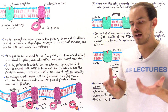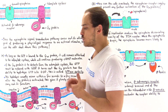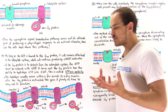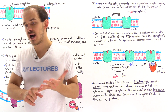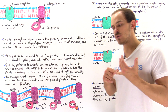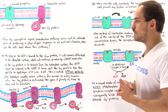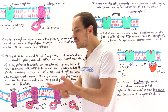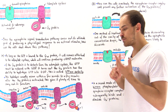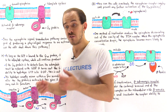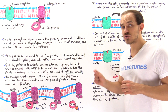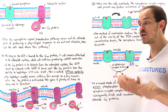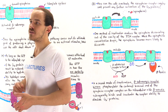In the previous lecture we discussed the epinephrine signal transduction pathway, finishing by noting that a cell must be able to turn off that pathway at the right moment in time. If it cannot turn off that pathway, it will lead to many different types of negative effects. So in this lecture I'd like to answer the following question: once the epinephrine signal transduction pathway carries out its ultimate goal of producing a specific physiological response, how can the cell actually shut down this pathway?